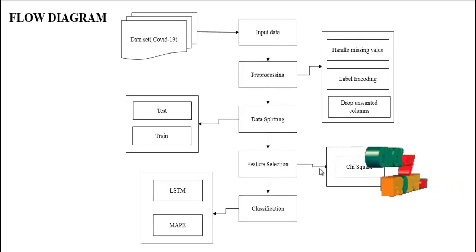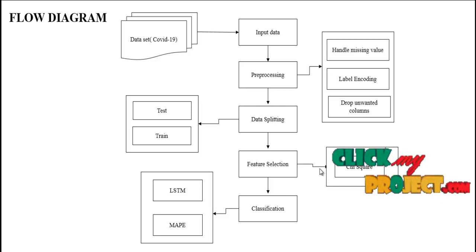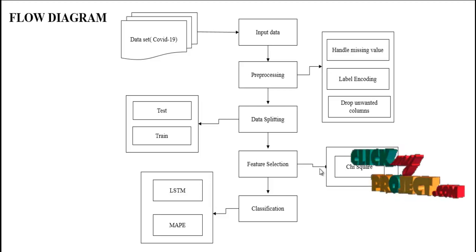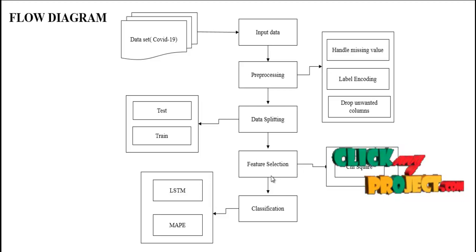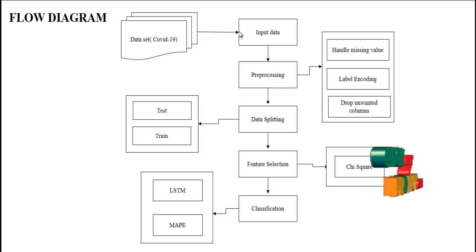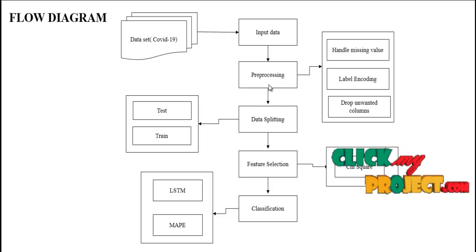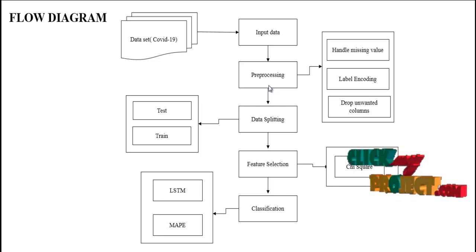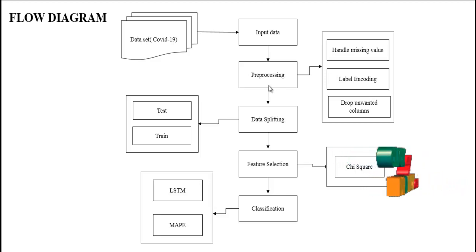Now we are going to see the flow of our process. First, we implement our dataset — here we are implementing the COVID-19 dataset and taking input from it. Then we implement the preprocessing step, where we remove unwanted data or unnecessary noise from our input.